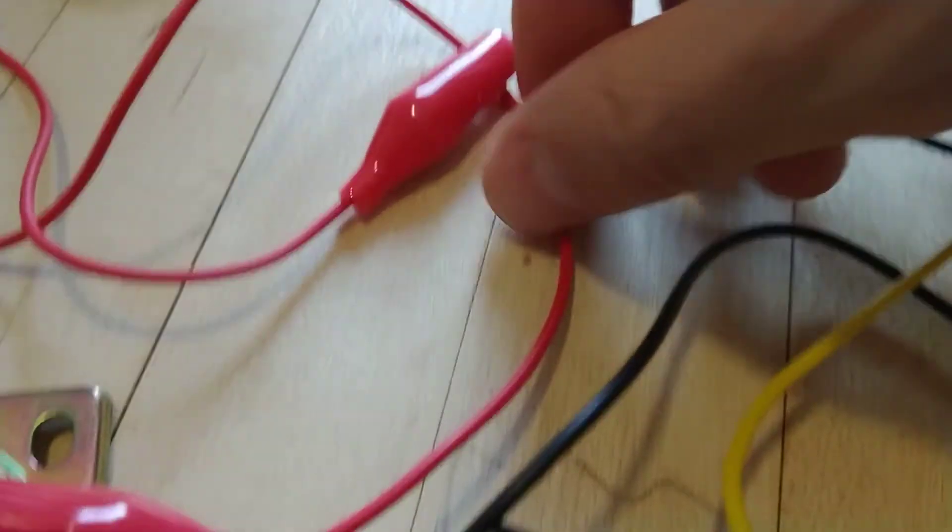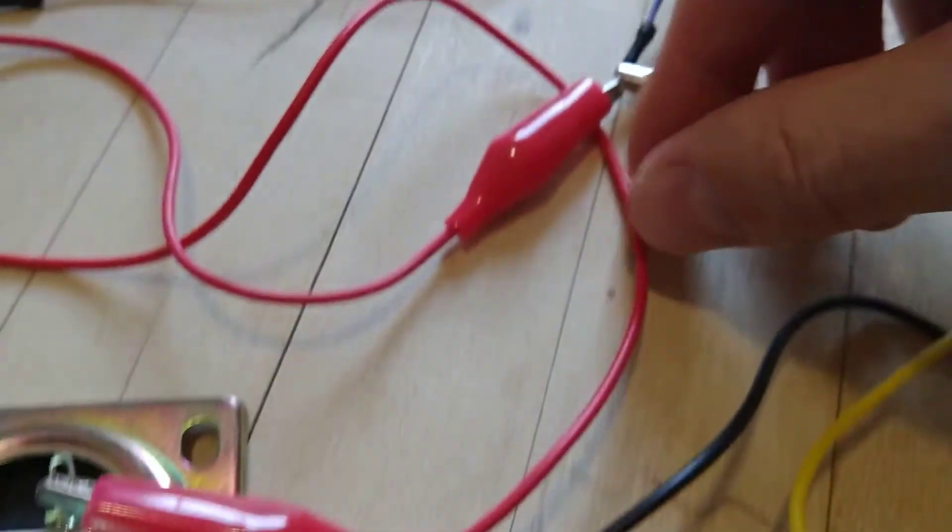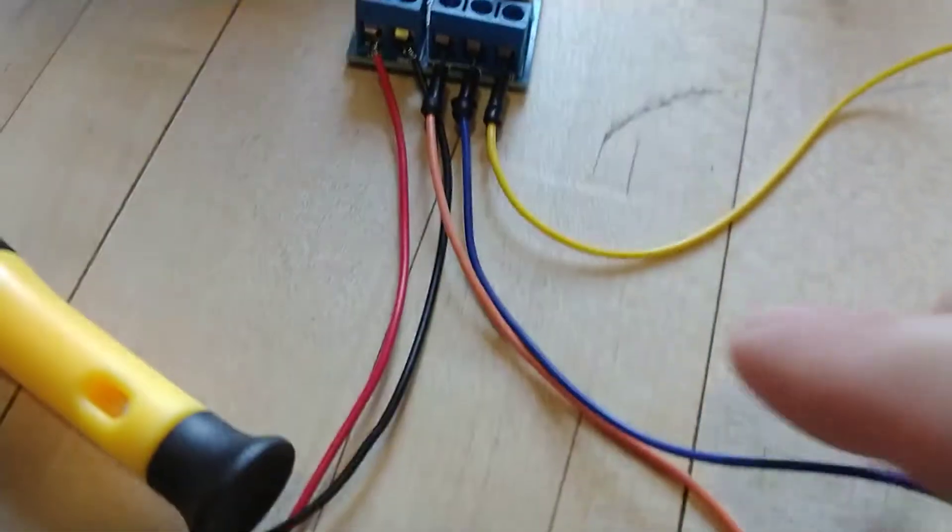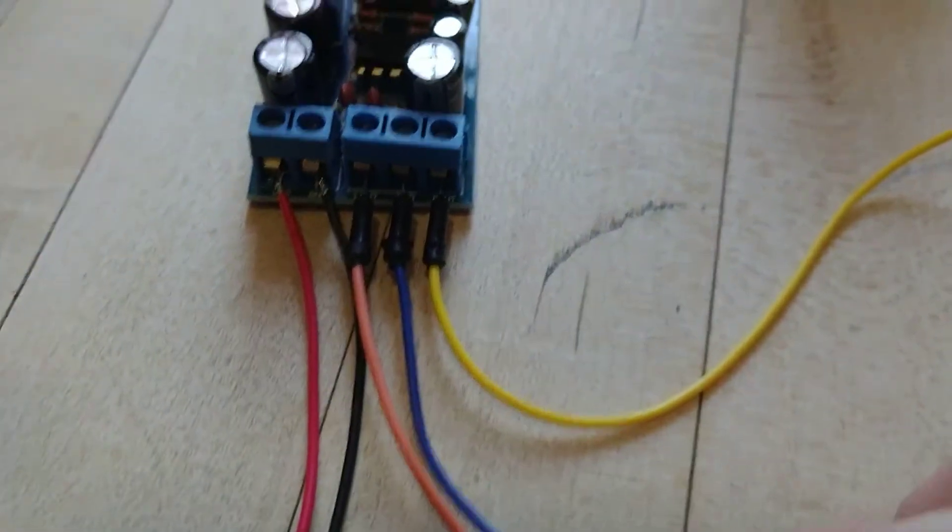Now the red one here is going to be ground for the speaker, and it is going to this blue wire which is connected to the ground for the outputs.